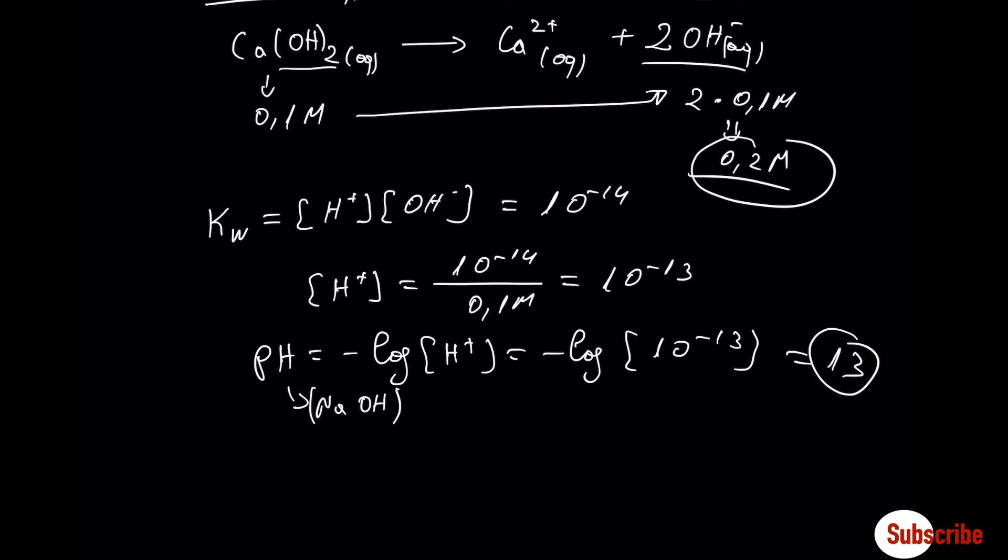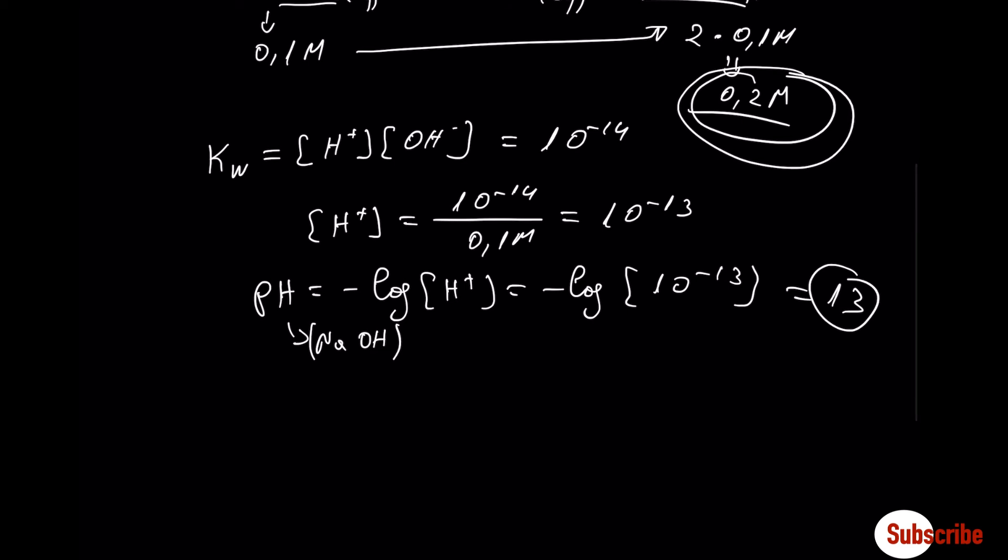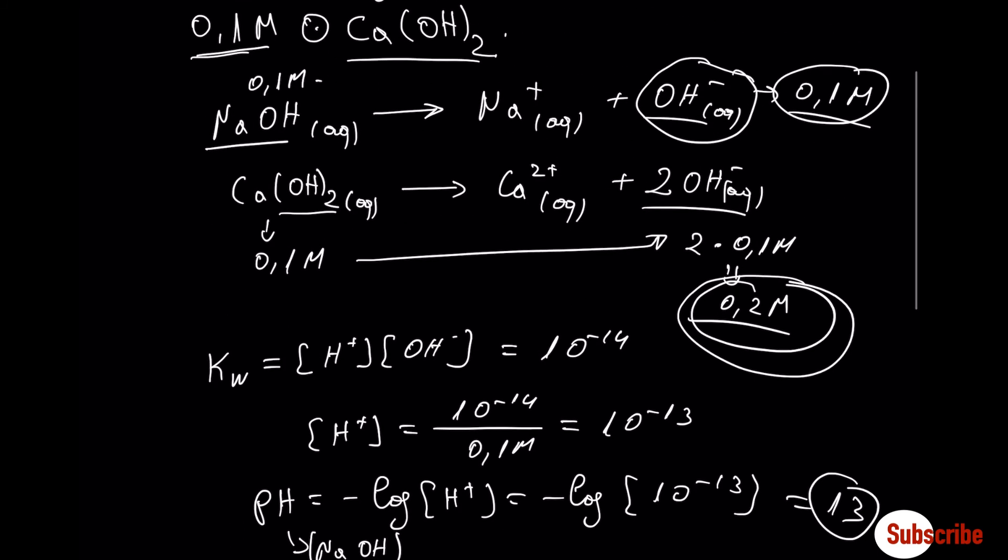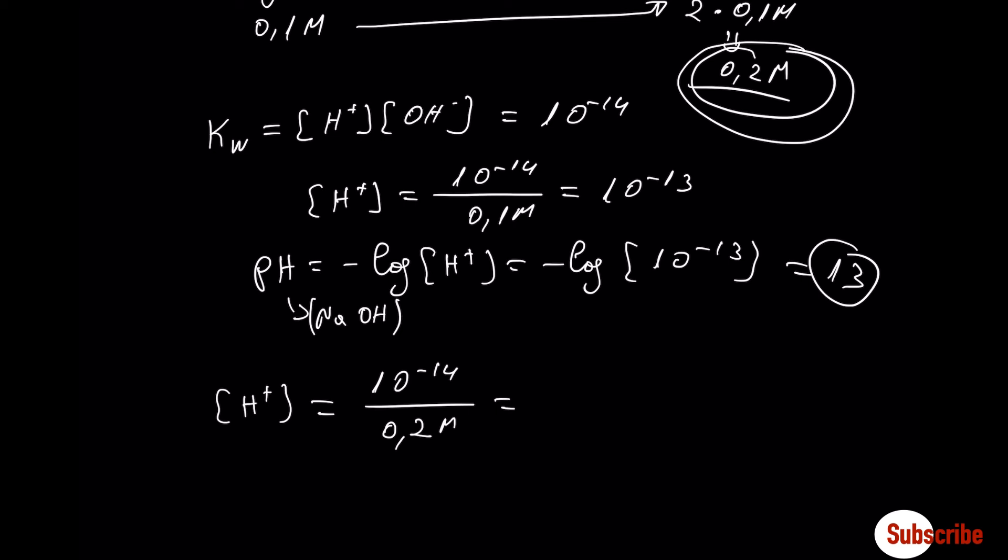Let's move now to find the pH of calcium hydroxide, which is the same procedure, but you have to keep in mind that the concentration of OH- is 0.2 molar due to the stoichiometry. So, what do we have? Again, concentration of H+ is equal to 10 to minus 14 divided by 0.2 molar that comes from the concentration of OH- after the dissociation of calcium hydroxide.